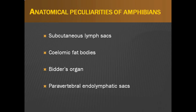Before we do, there are several anatomic features of importance in amphibians that should be kept in mind during the examination, including the subcutaneous lymph space, celomic fat bodies, Bidder's organ, and the paravertebral endolymphatic sacs. Several of these will be illustrated in the following images.